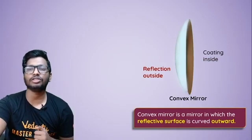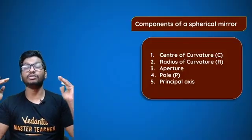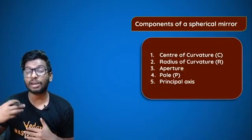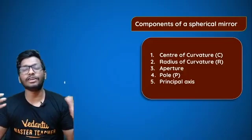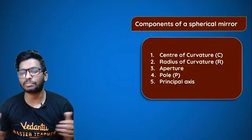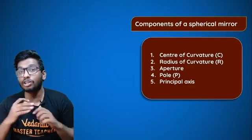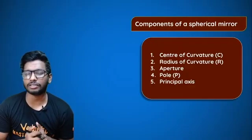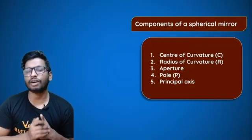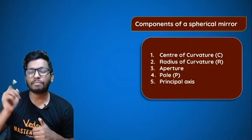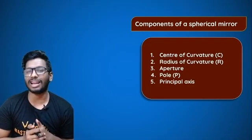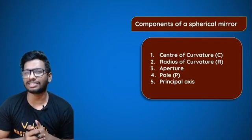Now that you've understood concave and convex mirrors, let's talk about the nomenclature you have to be aware of when dealing with a spherical mirror — that is, the components of spherical mirrors. The first one is the center of curvature, then the radius of curvature, aperture, the pole, and finally the principal axis.